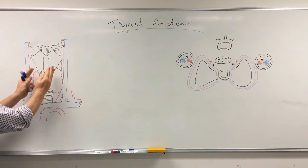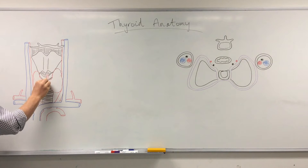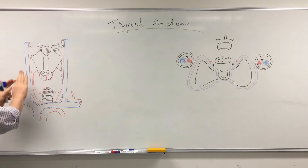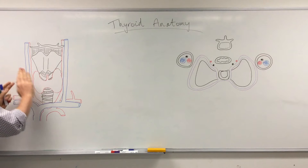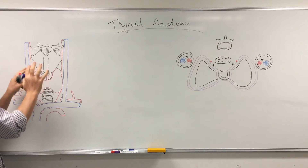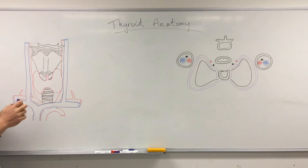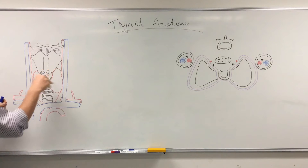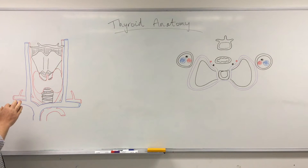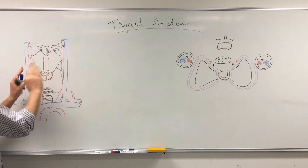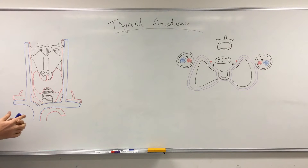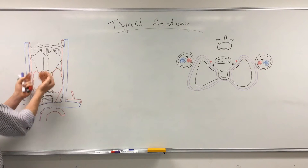The isthmus has connective tissue attaching it to the second to fourth tracheal rings and is fairly well stabilized, while the lobes themselves are movable. There is a fibrous capsule running over the top of the thyroid gland, which can send septa into the gland itself. Around the front is a loose connective tissue — the pretracheal fascia — that wraps around it.